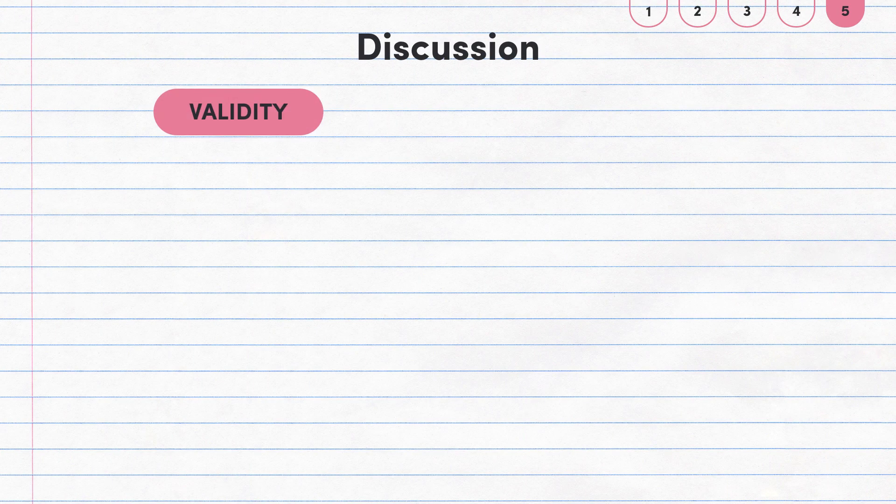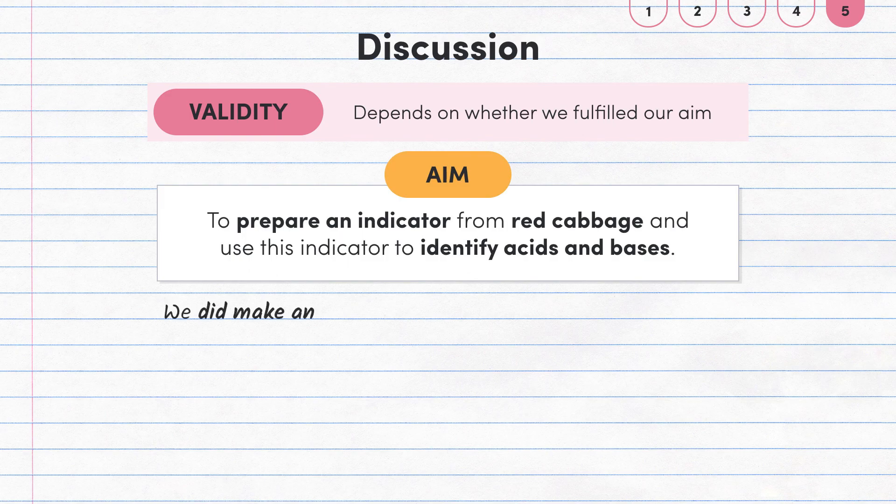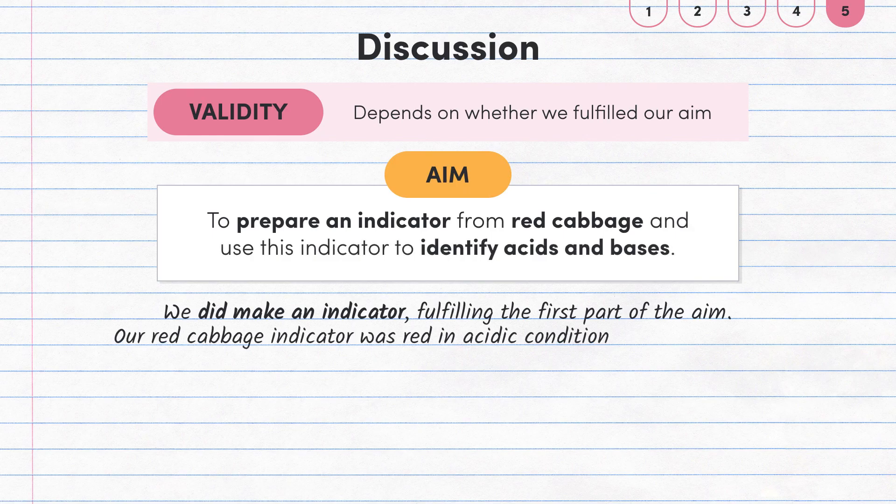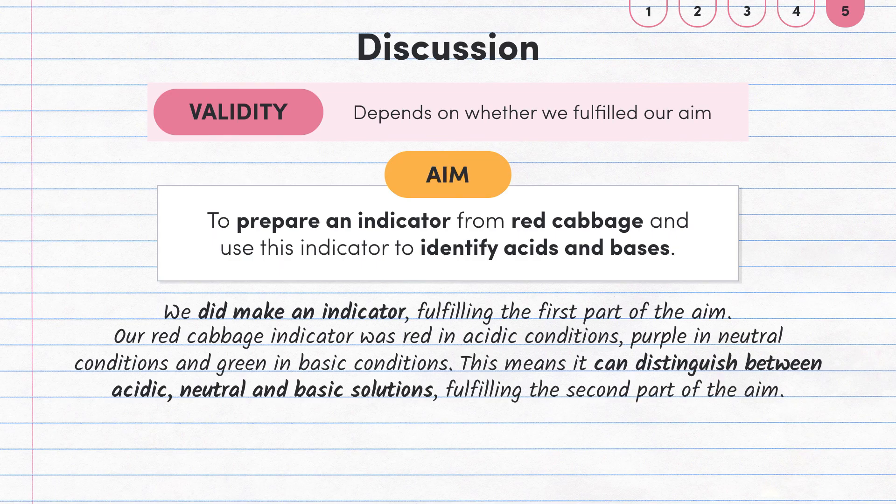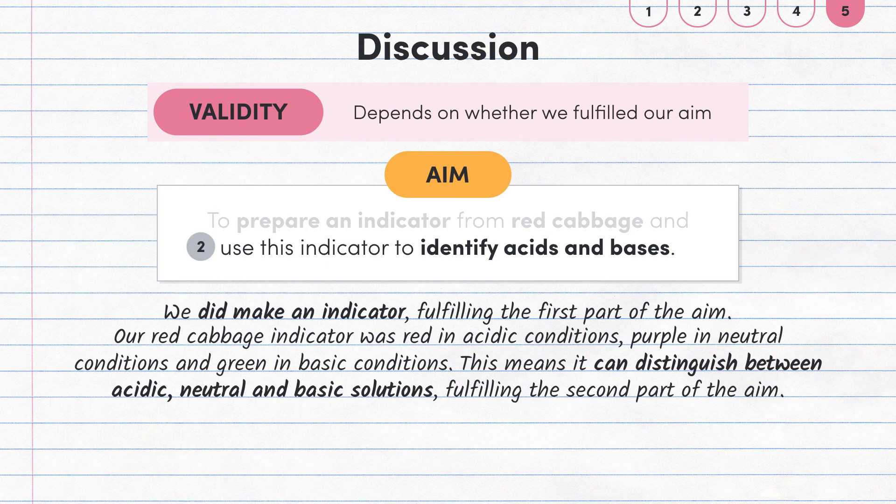The validity of our experiment depends on whether we fulfilled the aim. We did make an indicator so the first part of the aim was fulfilled. Also, our red cabbage indicator was red in acidic conditions, purple in neutral conditions and green in basic conditions. This means the red cabbage indicator can distinguish between acidic, neutral and basic solutions. So the second part of the aim was fulfilled and the experiment was valid.